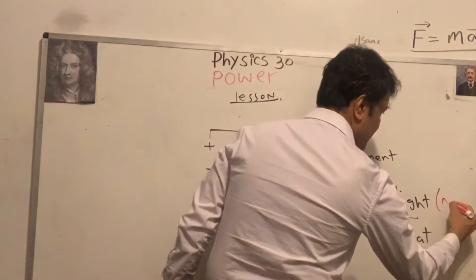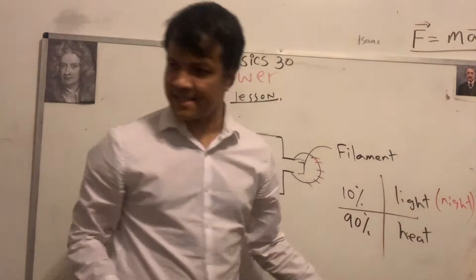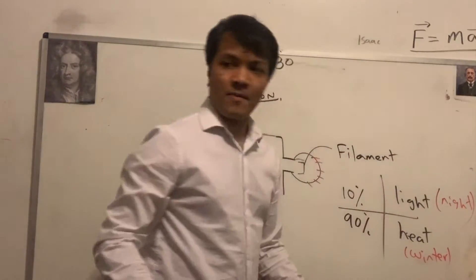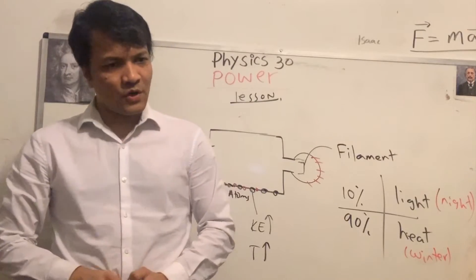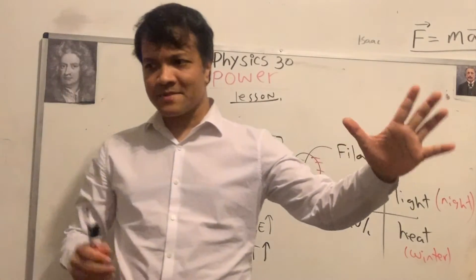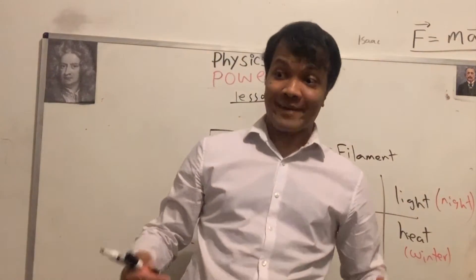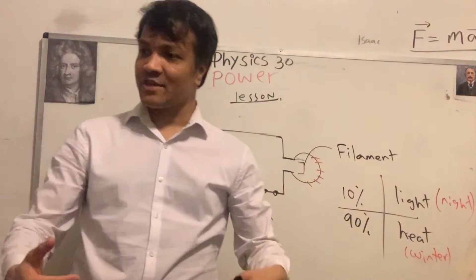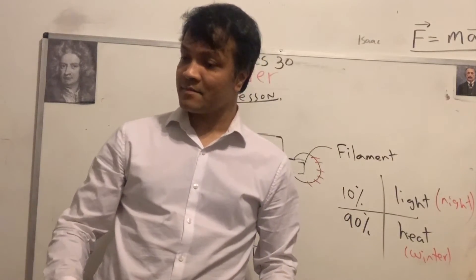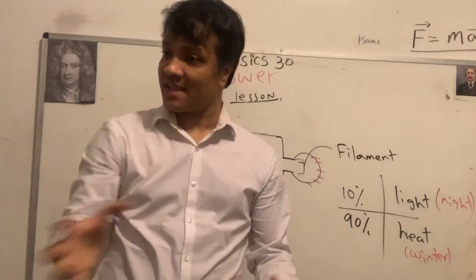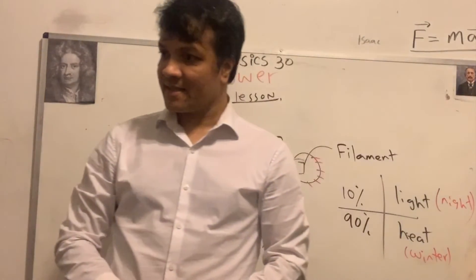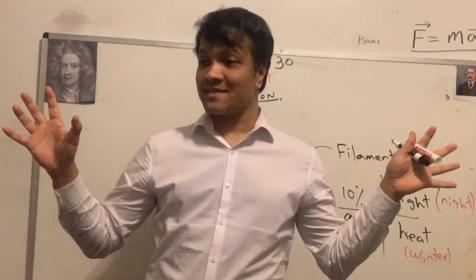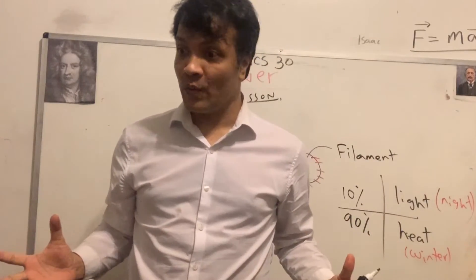That's why when you touch the lights on a car, your hand practically burns. We use light at night, but heat is always useful — especially in winter. A radiator gives heat. The light bulb above us converts 90 percent of electric energy to heat and only 10 percent to light.